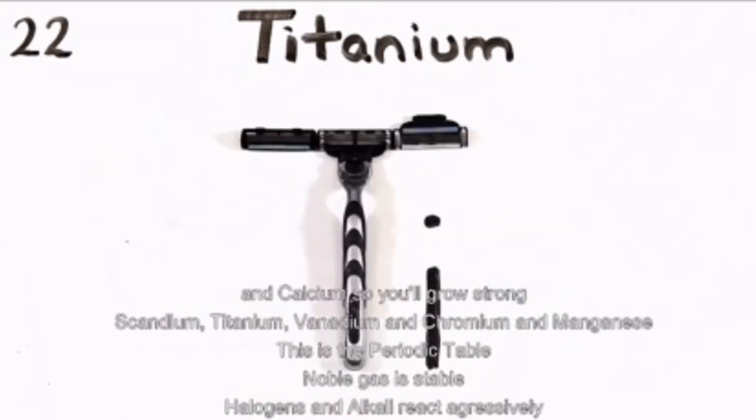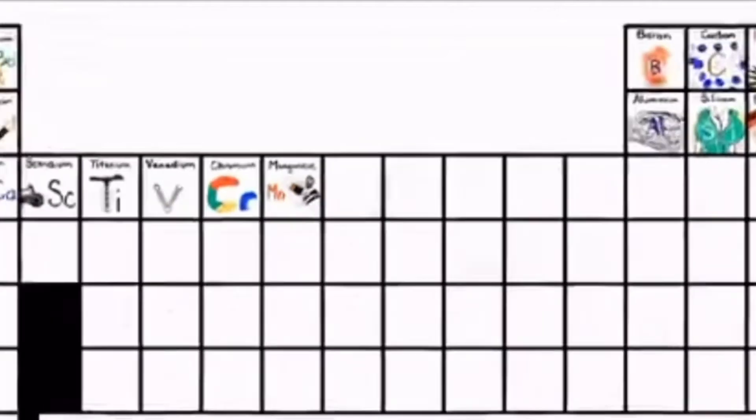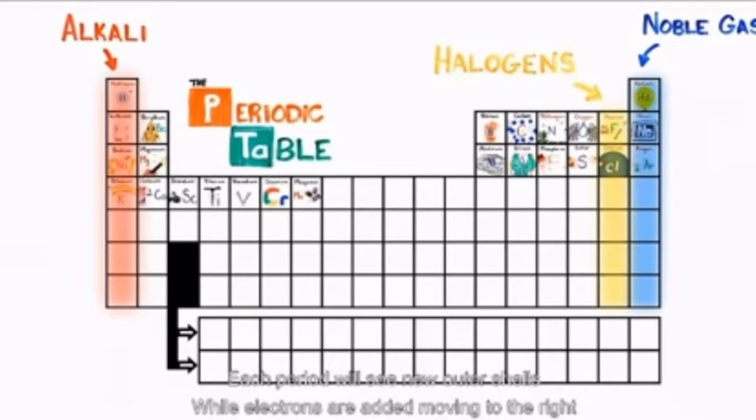Scandium, titanium, vanadium, and chromium, and manganese. This is the periodic table, noble gas is stable, halogens and alkali react aggressively.